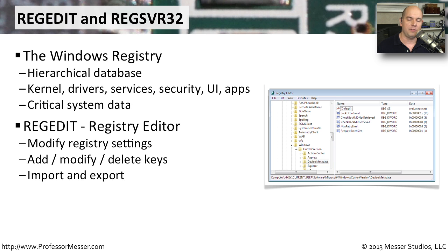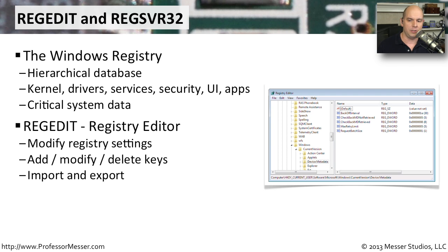To see what's inside of the registry, you'd use a program called RegEdit — the Registry Editor. RegEdit allows you full and complete access to edit the information inside of the registry. You can also add keys, delete keys from your registry, and back up the information and re-import it. It's very common when making a change inside the registry to export out the section you're working on so that if your change causes a problem, you can simply import the old configuration right back in.